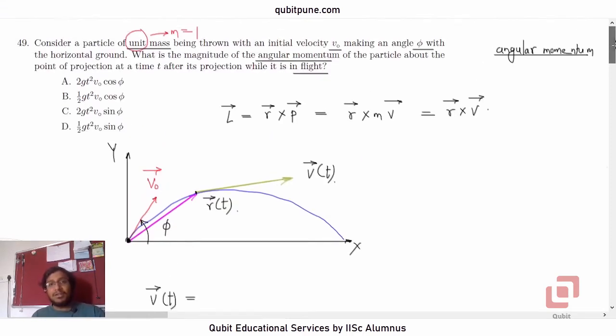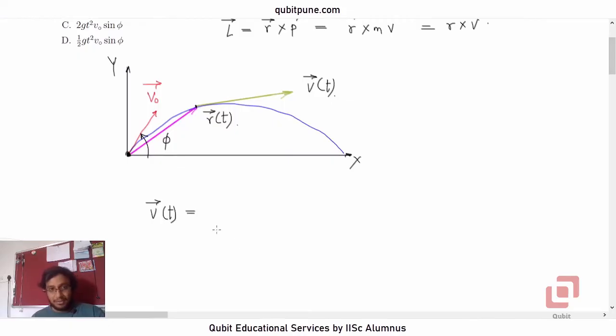the horizontal component is always going to be constant. So it will be V naught cos phi. But what will happen to the y component?